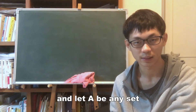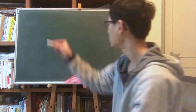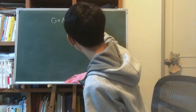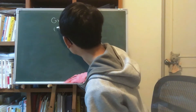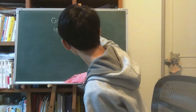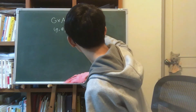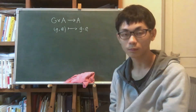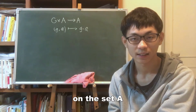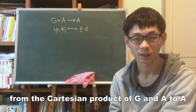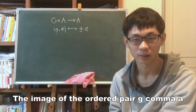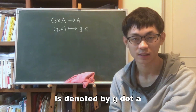Let G be a group and let A be any set. A group action of the group G on the set A is a function from the Cartesian product of G and A to A. The image of the ordered pair (g, a) is denoted by g · a.